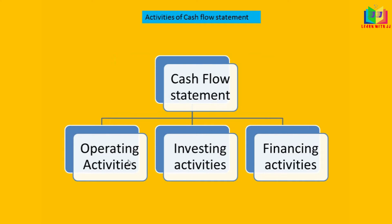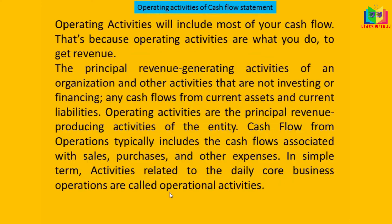The cash flow statement has three activities: operating activity, investing activity, and financing activity. Operating activities include most of the cash inflow and outflow — specifically, how you spend money to generate revenue. It is considered the principal revenue-generating activity of the organization, and cash flow from operating activity is normally associated with sales, purchases, and other expenses.